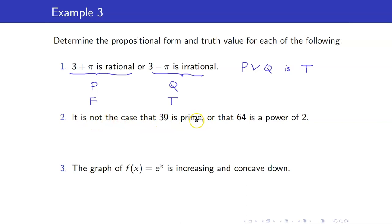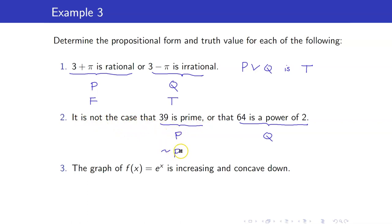Next: 'It is not the case that 39 is prime, or that 64 is a power of 2.' Let P be '39 is prime' and Q be '64 is a power of 2.' Notice the comma — this is saying not P or Q. 39 is prime? That is false, so not P is true. 64 is a power of 2? That is true. Both are true; we only need one to be true because this is 'or.' Therefore the entire statement is true.